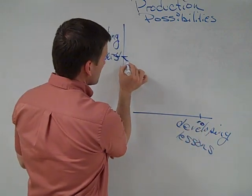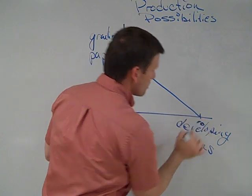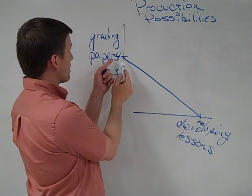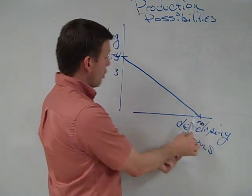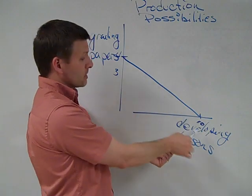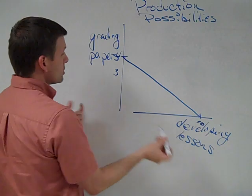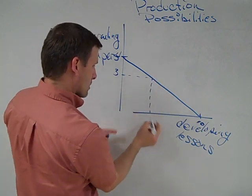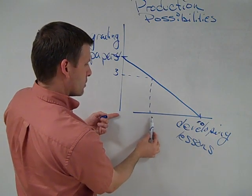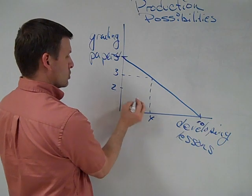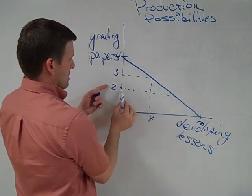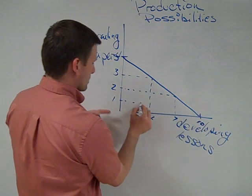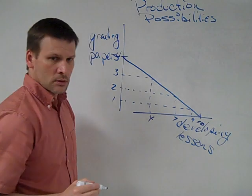I can then draw a line connecting these two extreme positions. And what that tells us is, for example, I could do four papers grading, or I could develop ten lessons, or I could do a combination of these two. That's what this curve, that's what this line, that's what these production possibilities tell me. So, for example, I could do three papers, in which case it looks like I would perhaps, that's looking maybe like four. I could do two papers, and it looks like I would be able then to, maybe that's, let's just say for argument's sake, that that's seven. Or I could do one lesson, and maybe that's nine.